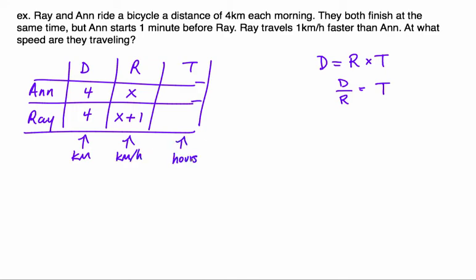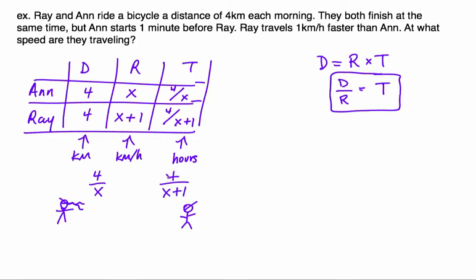That means this is going to have to be in hours. So the time it takes Ann, and the time it takes Ray, could be figured out using this part of the DRT formula. You could take their distance and divide it by their rate, and work out time equations for each of these people. So Ann takes this amount of time, and Ray takes this amount of time to bike.